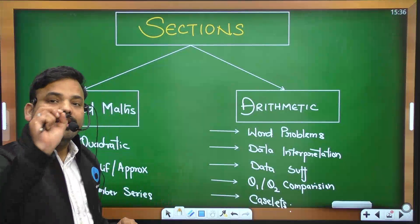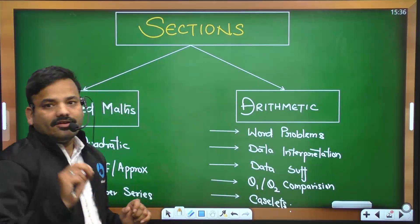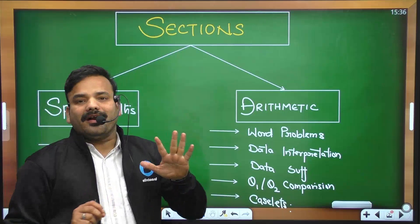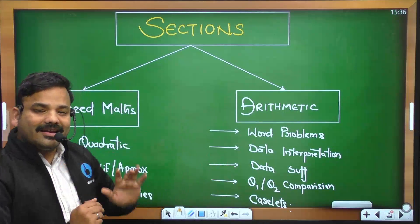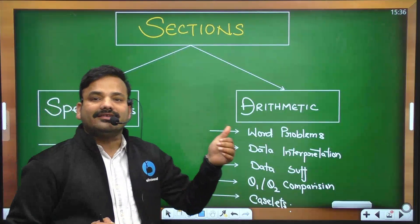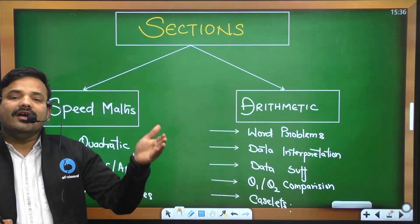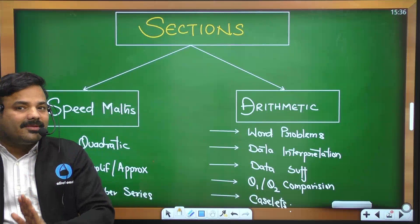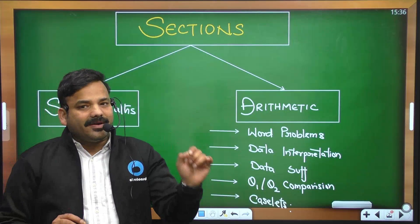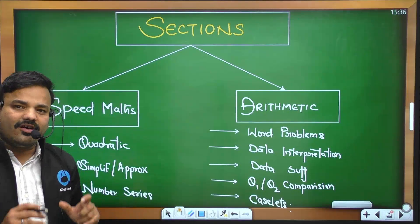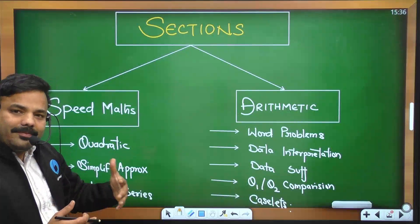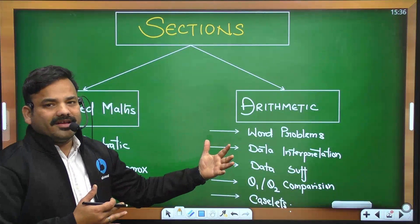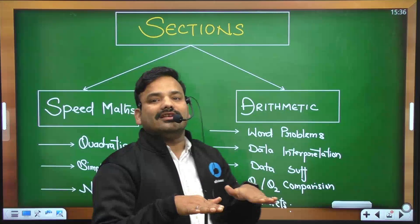Ab baat karte pehle arithmetic ke. Toh arithmetic ke 5 part hain. Yeh bahut zyada important hai. Kisi bhi bachche ko parallel pre ke saath mains ki bhi taiyari karna chahiye, kyunki mains ke liye aapko koi extra time nahi milne wala hai. Sirf 15 se ek mahine ke andar hi aapka mains convert ho jata hai, aur usmein aapko bahut zyada kuch zyada nahi sikhna hoga. Jo aapne pre mein dekha hoga, wohi dekhna padega aapko mains mein bhi. But aapko parallel dono ko lekar chalna hoga.